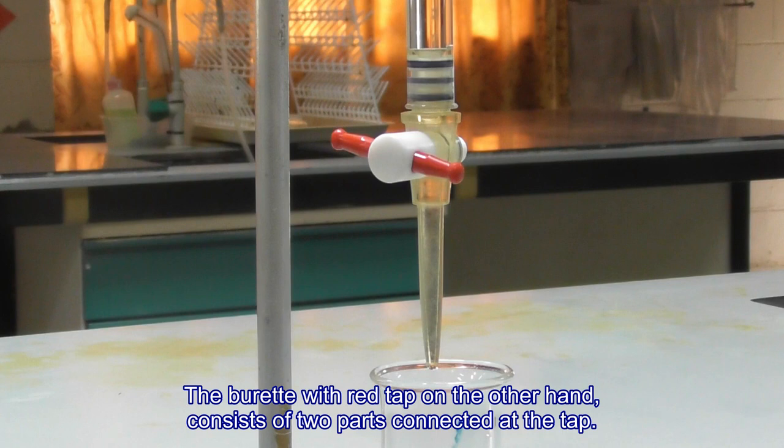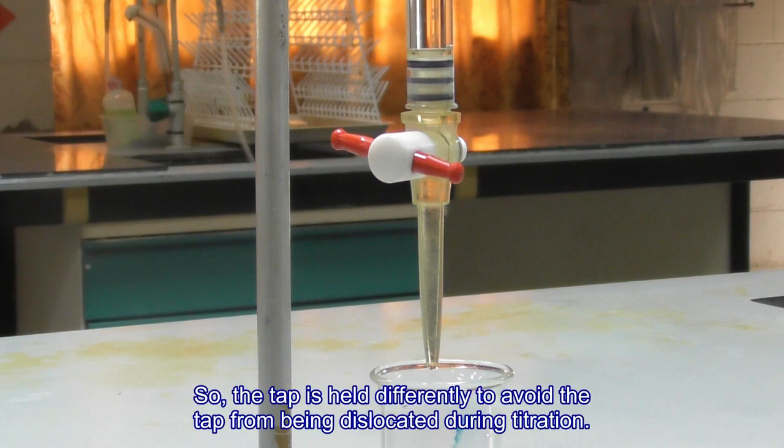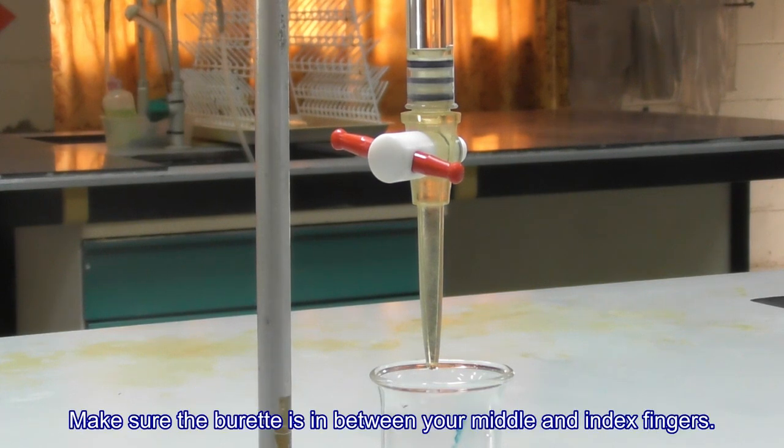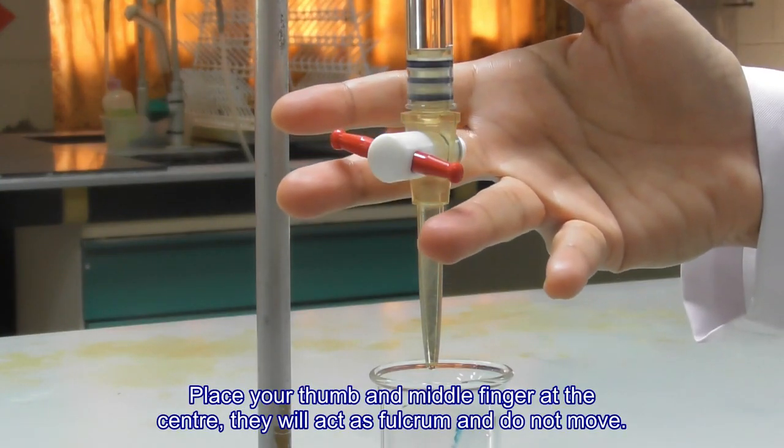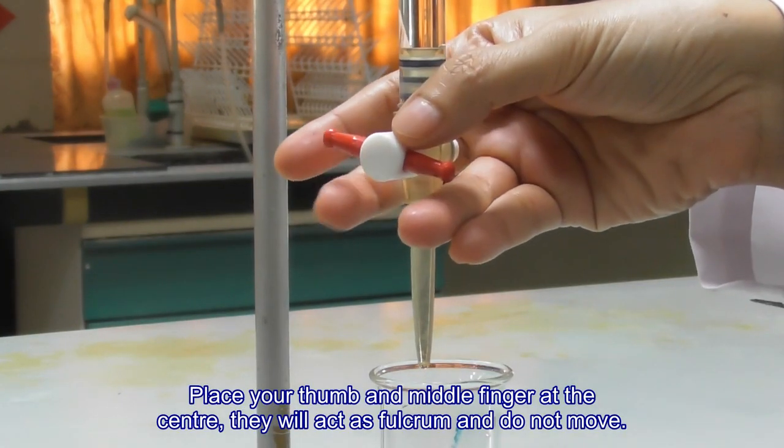The burette with red tap, on the other hand, consists of two parts connected at the tap. So the tap is held differently to avoid the tap from being dislocated during titration. Make sure the burette is in between your middle and index fingers. Place your thumb and middle finger at the center.